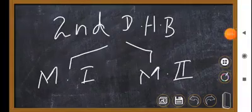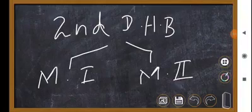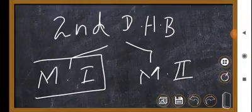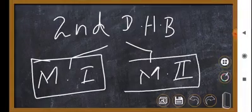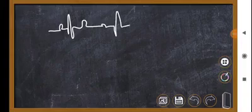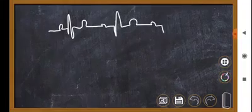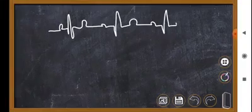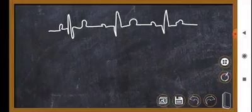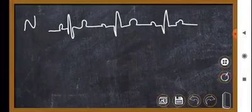Second-degree heart block is further subdivided into mobits type 1 and mobits type 2. Suppose this is a normal ECG, and these are P, QRS, and T waves. Now I draw an ECG with mobits type 1 heart block.